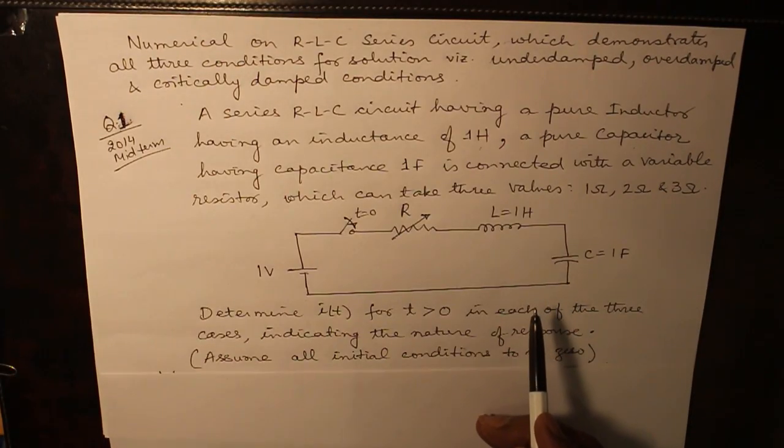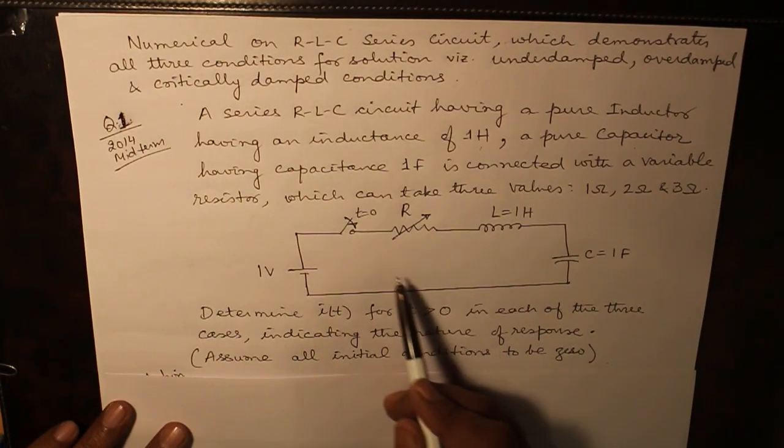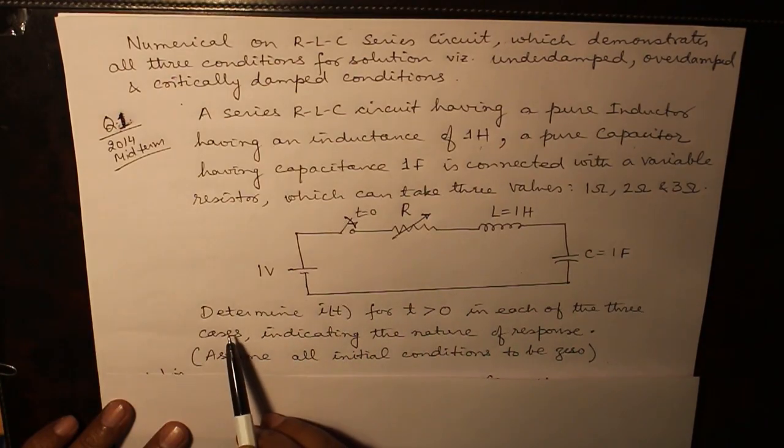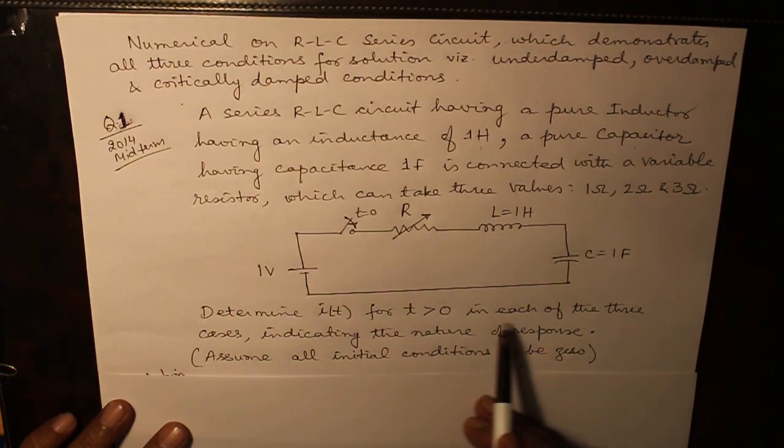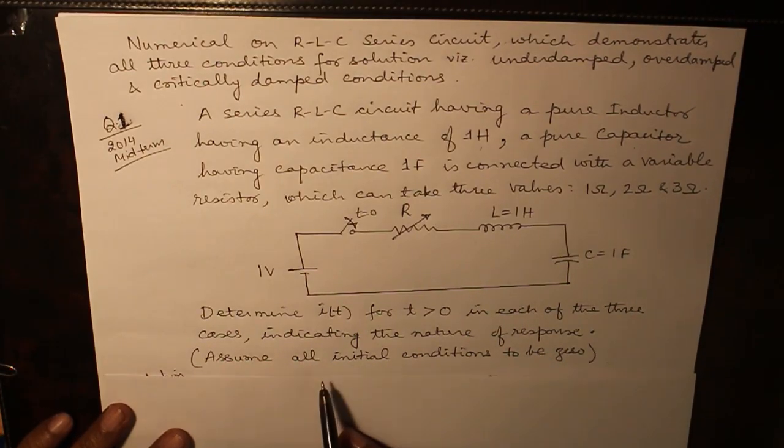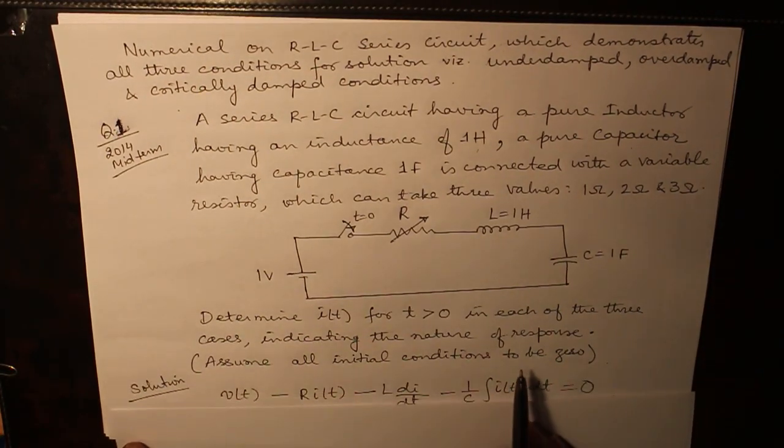We write down the cascade equation and try to find out what is the value of current. The question goes: determine I(t) for t greater than 0 in each of the three cases, indicating the natural response and we have to assume all initial conditions to be 0.